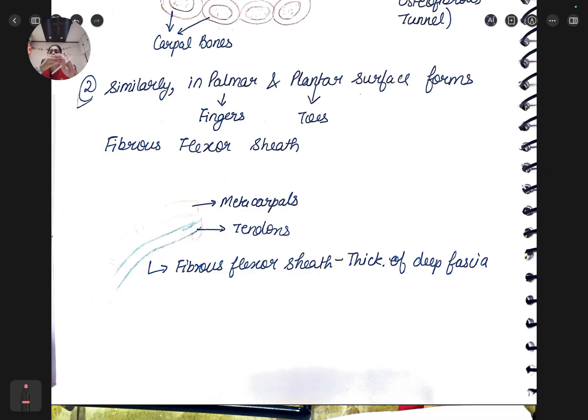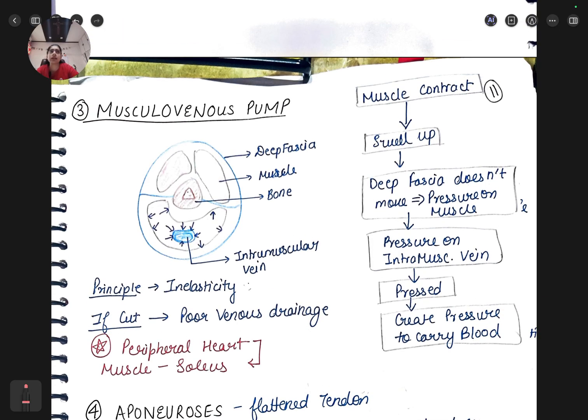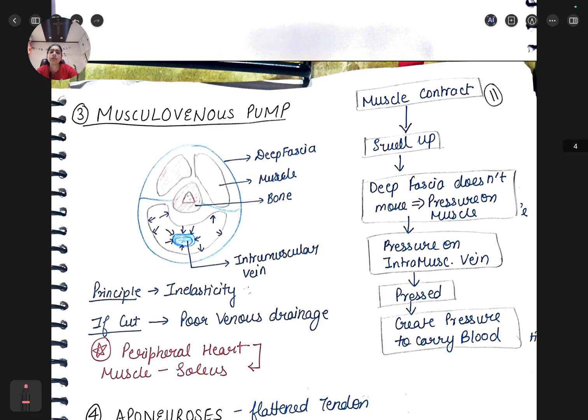Musculovenous pump is the third modification. The venous drainage is very slow and arteries have the heart to pump but in veins we don't have anything. For example, from our legs how does the venous blood come to our heart? When the muscles contract they do a suckling action to push the blood up. Muscle contracts then swells up, deep fascia doesn't move, so pressure in the compartment increases. The veins will get pressed and create pressure to carry the blood.